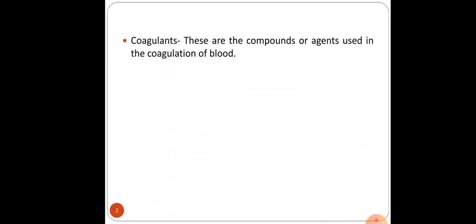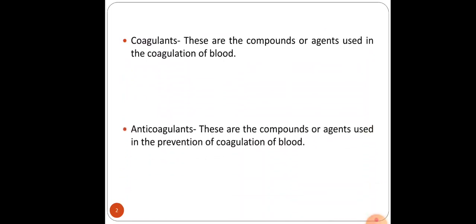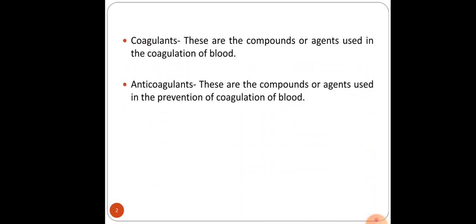Let us see first the definitions. Coagulants, these are the compounds or agents used in the coagulation of blood. Coming to the anticoagulants, these are the compounds or agents used in the prevention of coagulation of blood.